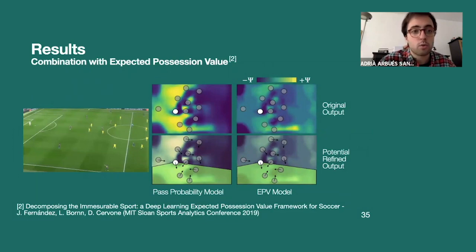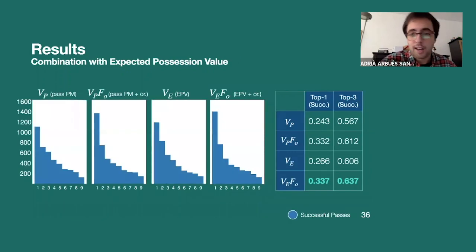Then we would like also to combine our model with some existing state-of-the-art techniques. And in particular, we checked it with expected possession value model. This was a paper introduced in the MIT Sloan Sports Analytics Conference of last year. And it is a model that predicts the posterior conditional probability of scoring or receiving a goal once the ball is moved to a particular position on the field. So in this model, they also used a pass probability model, but this didn't use any kind of orientation features. So we managed to combine them. And as you might see in this table, both the pass probability model and expected possession value model benefit from using orientation features, obtaining boosts of 8% and 7%.